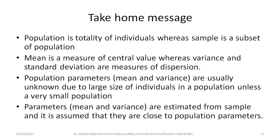The take-home message from this lecture: population is the totality of individuals, whereas sample is a subset of population. Mean is a measure of central value, whereas variance, standard deviation, and coefficient of variation are measures of dispersion. Population parameters are usually unknown due to the large size of individuals in a population, so mean and variances are estimated from the sample, assuming they are close to population parameters. Thank you very much for your attention. If you have any questions or comments, please contact me.